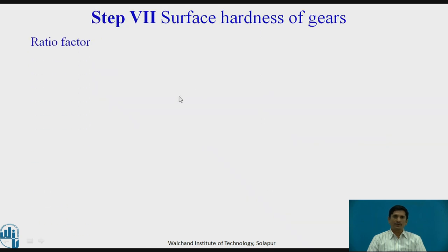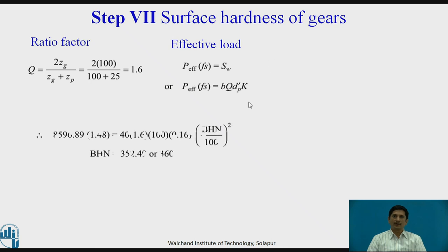The surface hardness of gears. Ratio factor is obtained as 2ZG upon ZG plus ZP. It is 1.6. Effective load is given as P effective into FS that equals SW. We are considering now wear strength as we need to find out surface hardness. Or P effective into FS equals BQDP dash K. If we rearrange the terms and put the value of SW, we can get BHN equals 352.49, or it is around 360. Surface hardness of gear, we can say that it is 360 BHN.